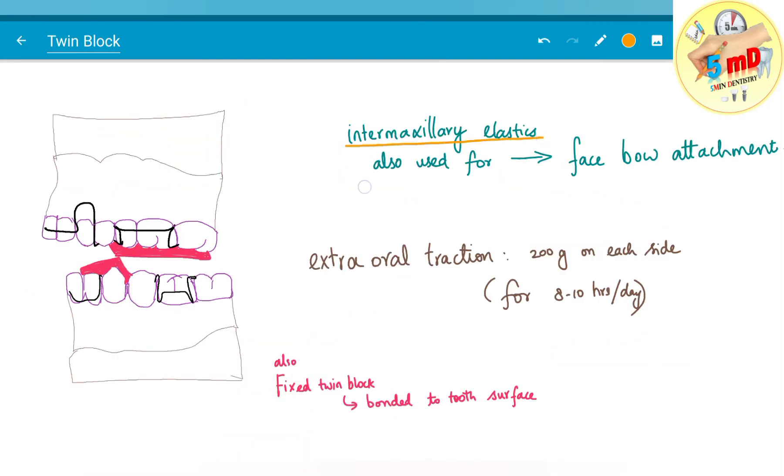The intermaxillary elastics are also used for face bow attachment and in extraoral traction, the force applied is 200 grams on each side for 8 to 10 hours per day. And also fixed twin block is used and as the name suggests it is bonded to the tooth surface.